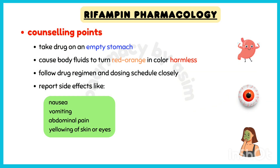Some important counseling points about rifampin: take this drug on an empty stomach. Rifampin can cause body fluids like urine, sweat, and tears to turn red-orange in color — this is harmless. Follow the drug regimen and dosing schedule closely to effectively treat TB. Report side effects like nausea, vomiting, abdominal pain, or yellowing of the skin or eyes.